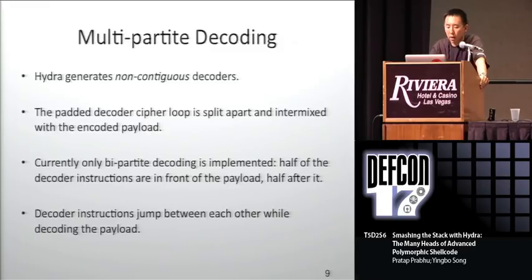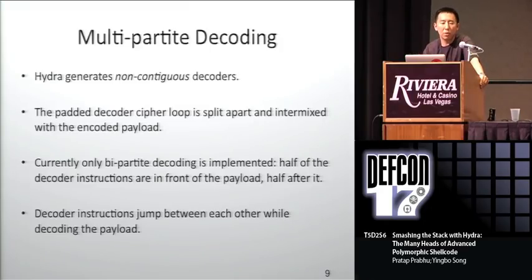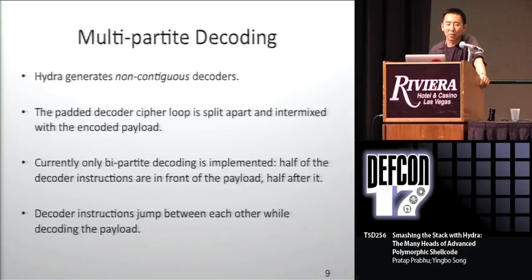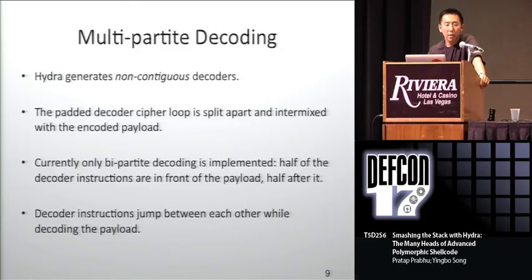Multi-partite decoding: Hydra generates non-contiguous decoders. In a traditional polymorphic engine, you have your no-op sled, your decoder, your payload — the no-op sled catches the execution jump and passes it into the decoder, which dynamically reverses whatever encoding method you used. But typically decoders are contiguous, just one block of code, and those can be detected by IDS sensors using signatures or statistical methods. In Hydra, we break up the decoder instructions and scatter them into the payload itself. The instructions jump between each other while decoding the payload, so you cannot easily write a signature for such a decoder. Currently, only bi-partite decoding is implemented — half the decoder instructions up front, half in the back, with payload in between — but we plan to add true multi-part decoding in the future.